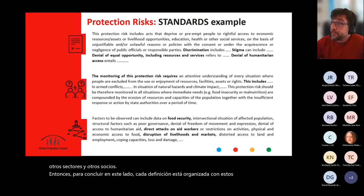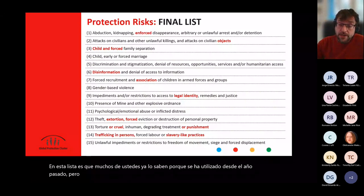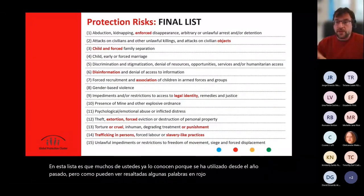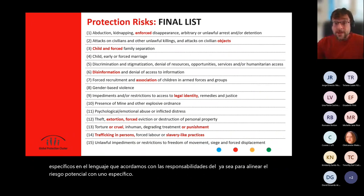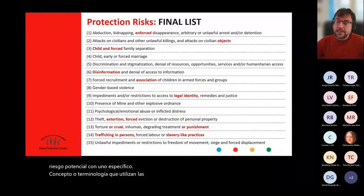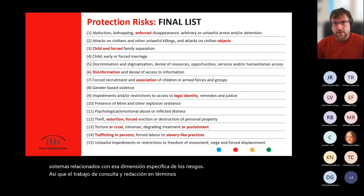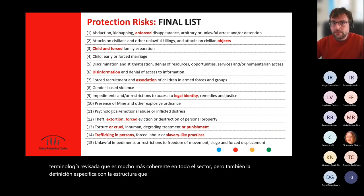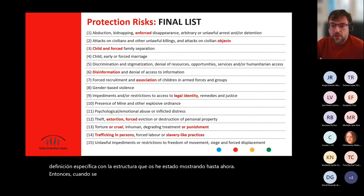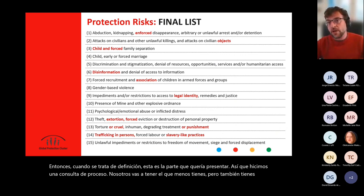In this list — which many of you already know from last year — I've highlighted some words in red. Those are specific changes in language agreed upon with the areas of responsibility, either to align the protection risk with terminology used by a specific AOR or to align with language that can help link with other systems related to that dimension of risks. The results of the consultation and drafting process are a revised list with much more coherent terminology across the sector, plus specific definitions with the structure I've been showing you. For the second quarter we'll work more on the human rights engagement side.